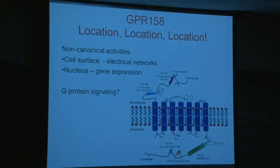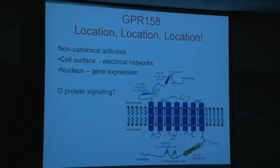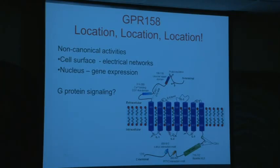Let me summarize: GPR-158 — it's all about location, location, location. There are non-canonical activities at the cell surface involved in electrical networking and depolarization, which causes neuronal signaling. But if it goes into the nucleus, changes in gene expression can affect things like ocular hypertension. The question still remains whether this gene signals like a normal G protein coupled receptor with G protein binding and downstream signaling. A paper from the Martemyanov lab did not find any indication of G protein signaling — its presence on the plasma membrane influenced other GPCRs, but it didn't signal itself. We don't find that either.